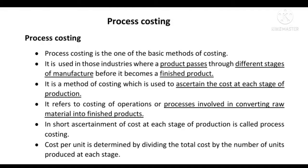Cost per unit is determined by dividing the total cost by the number of units produced at each stage. Process Costing is one of the methods of costing.